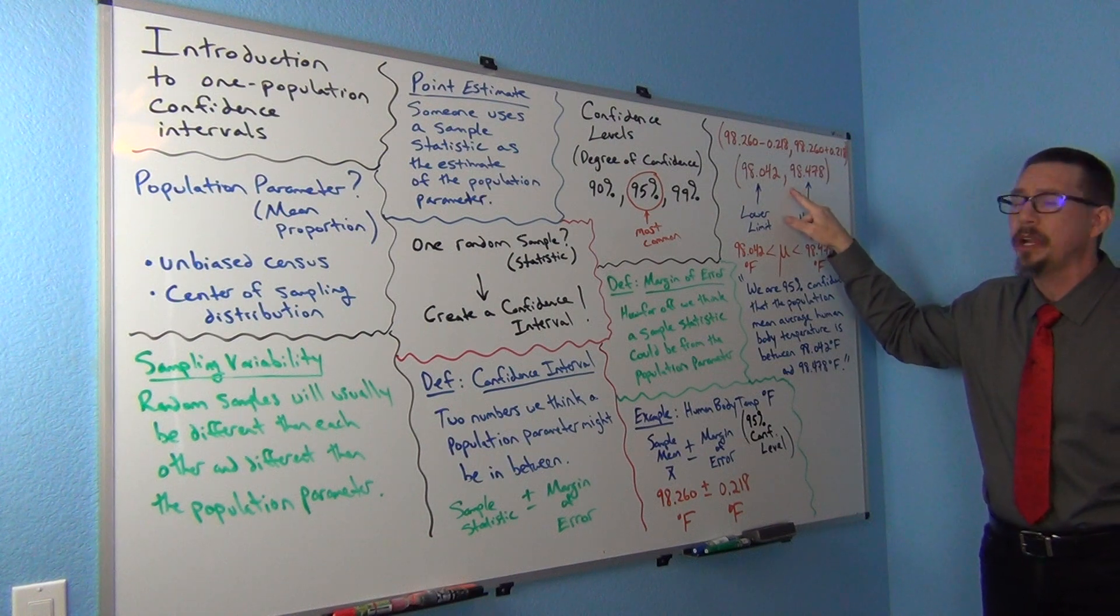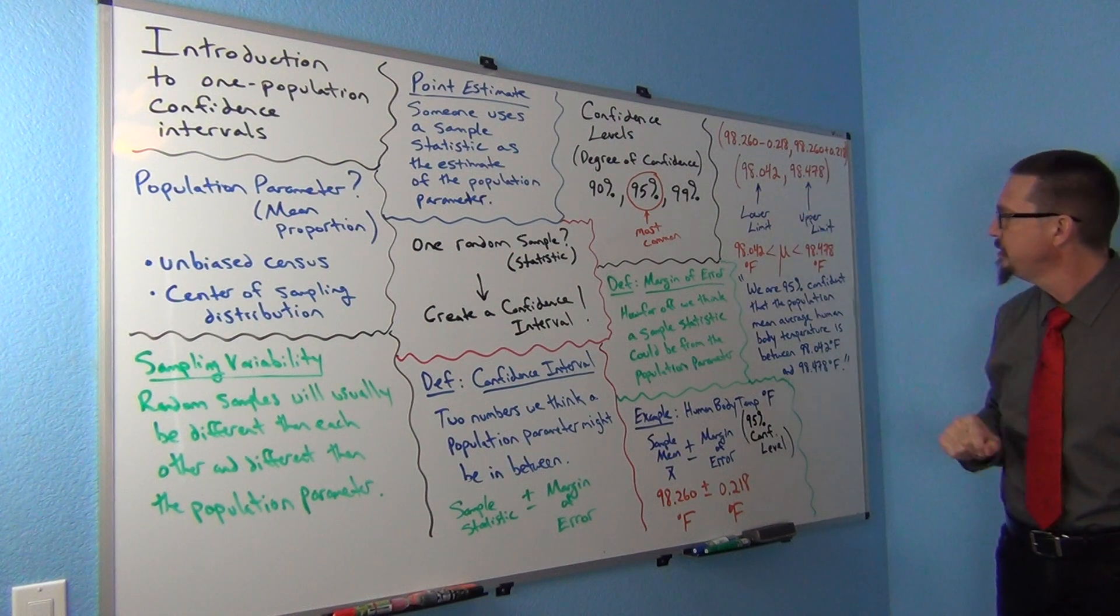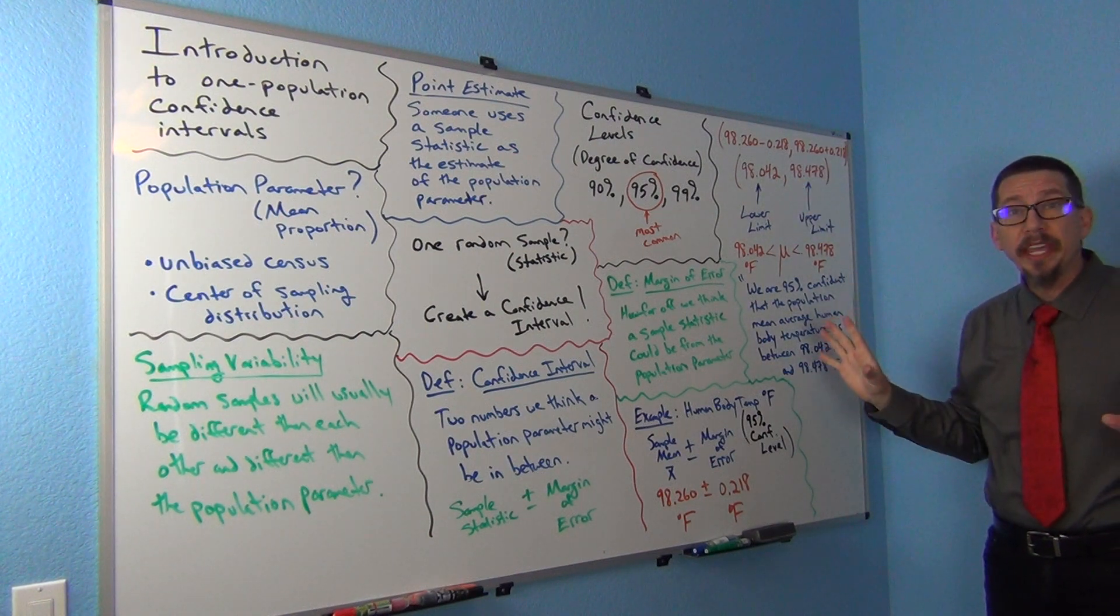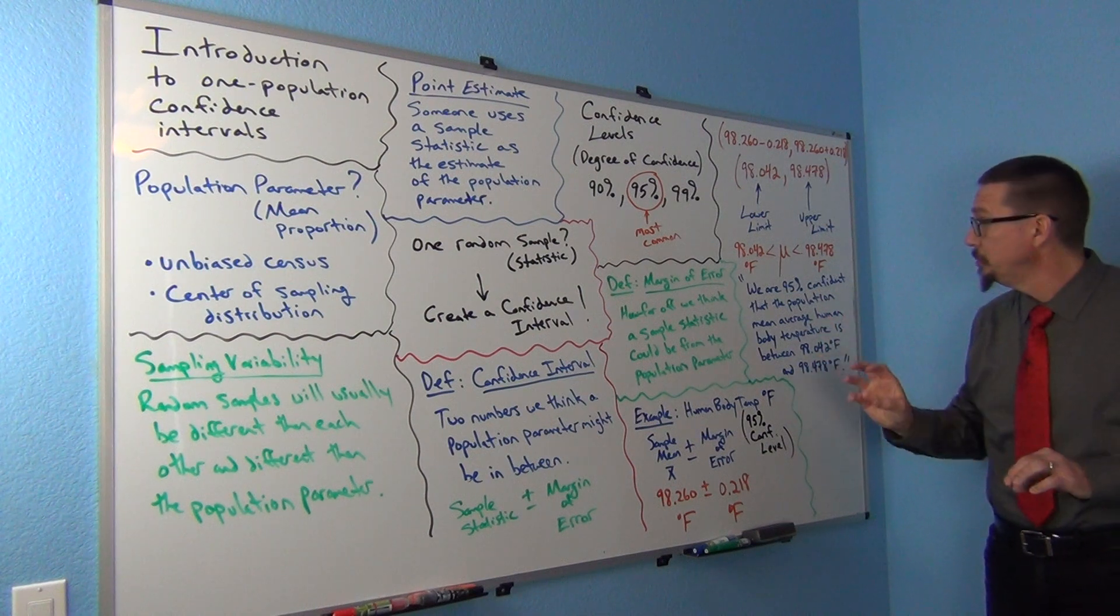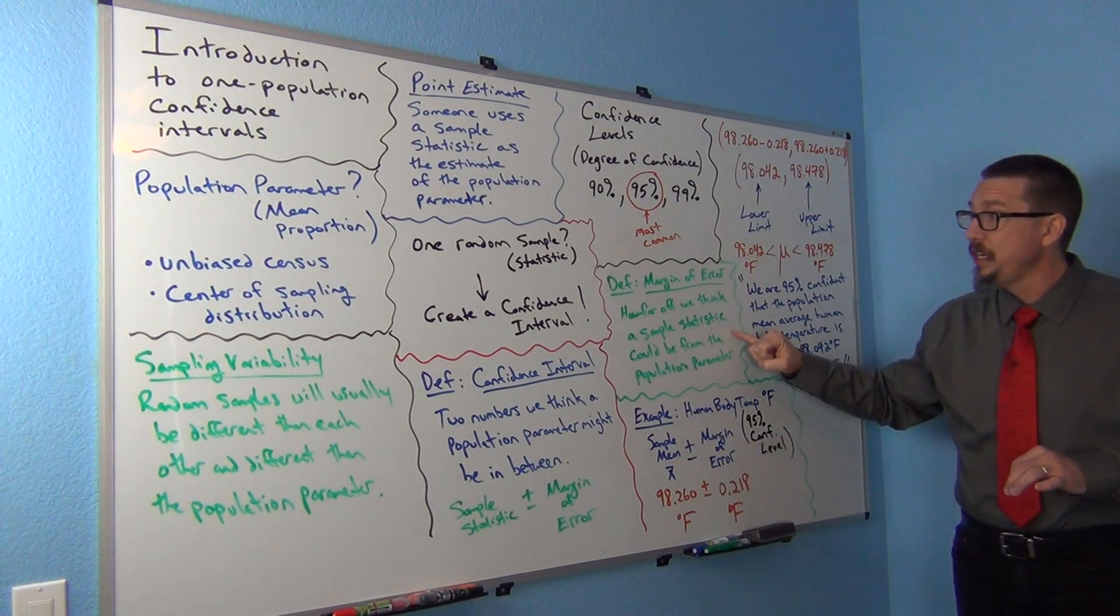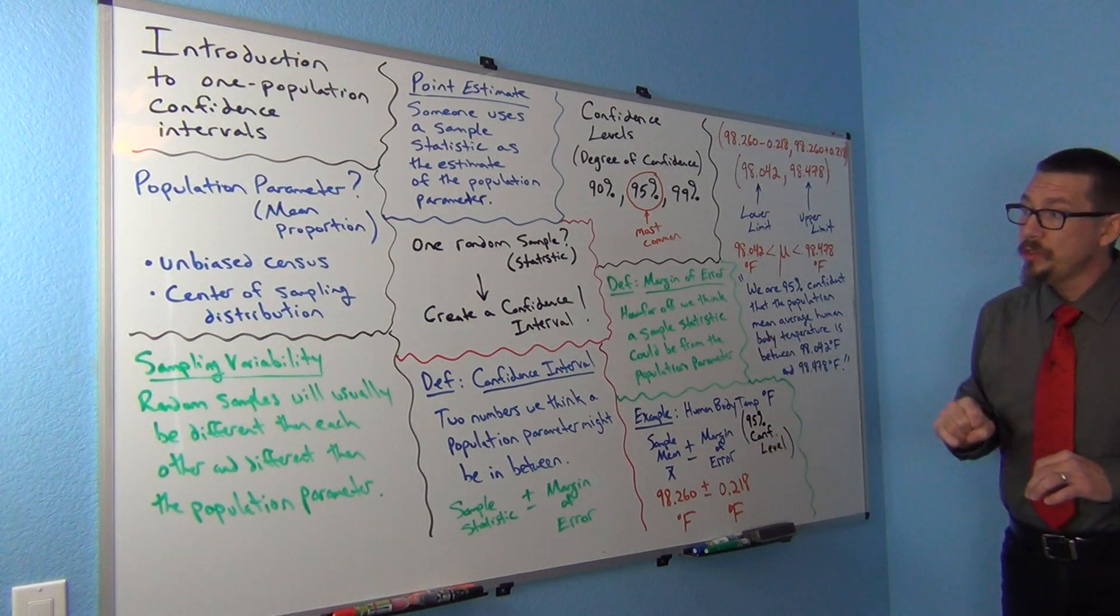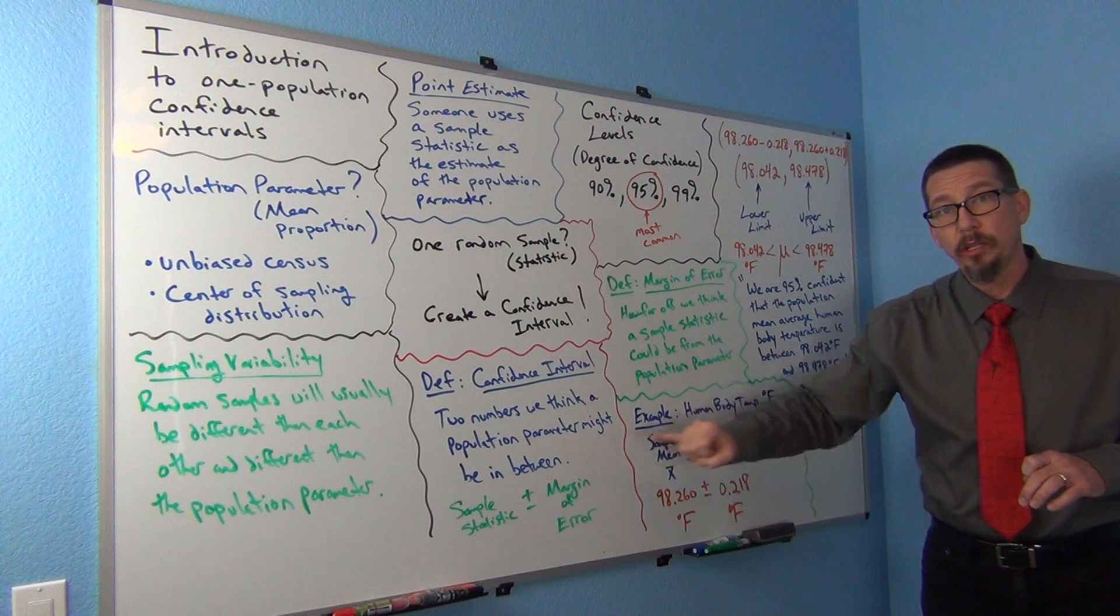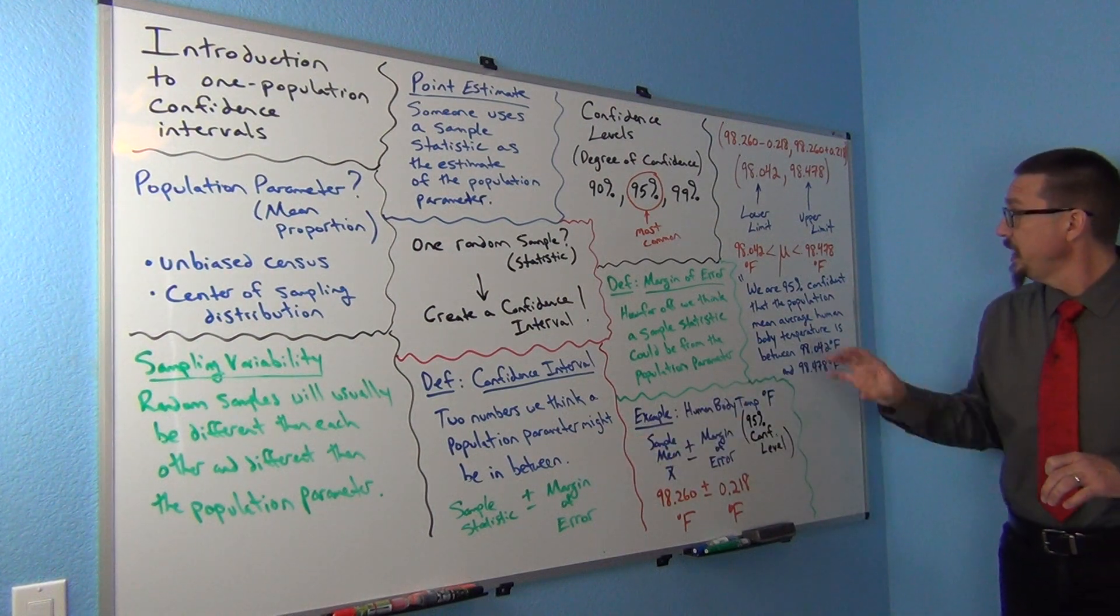The most important thing is not the calculation, the most important thing is the understanding. You should know the margin of error definition, you should know the definition of confidence interval, and one of the most important things is you should be able to write a sentence to explain the confidence interval to someone.